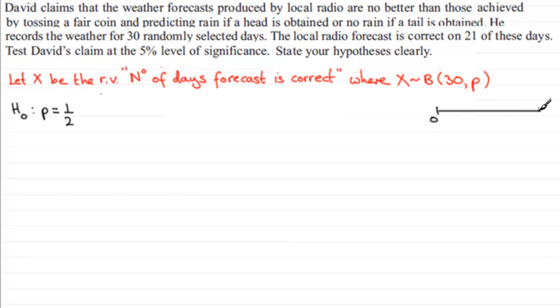If H₀ is a half, I would expect 15 of those days where David is correct just by tossing his coin. The thing is, we've seen that there are 21 days that the radio station forecast the weather correctly, so x equals 21.